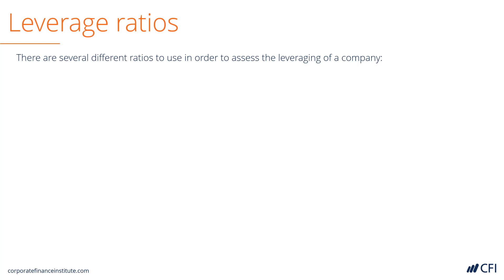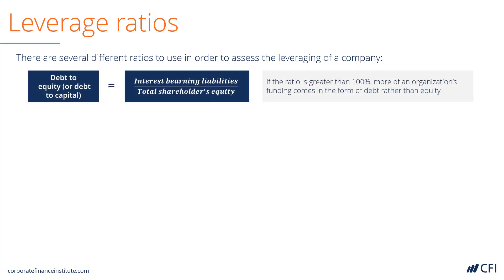There are several different ratios to use in order to assess the leverage of a company. The debt-to-equity ratio or debt-to-total capital ratio compares how much of a company's funding comes from equity versus debt. To calculate the debt-to-equity ratio, we take the total interest-bearing liabilities — including current and non-current items — and divide them by total shareholders' equity. If the ratio is greater than 100, it means the company has more financing coming from debt than equity.